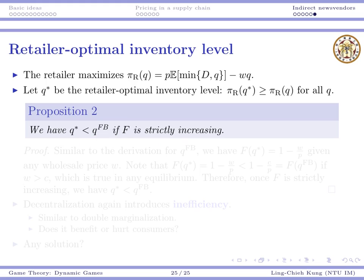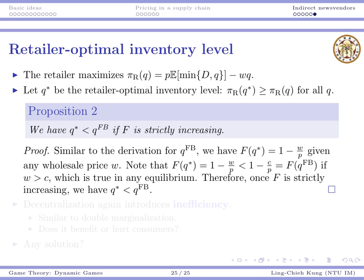But here is the power of the model: no matter what the probability distribution is — as long as it is continuous, non-negative, and strictly increasing — q* will be smaller under decentralization than under integration. The idea is simple: the retailer orders based on procurement cost. Under integration, the cost is c; under decentralization, the wholesale price must be larger than c.